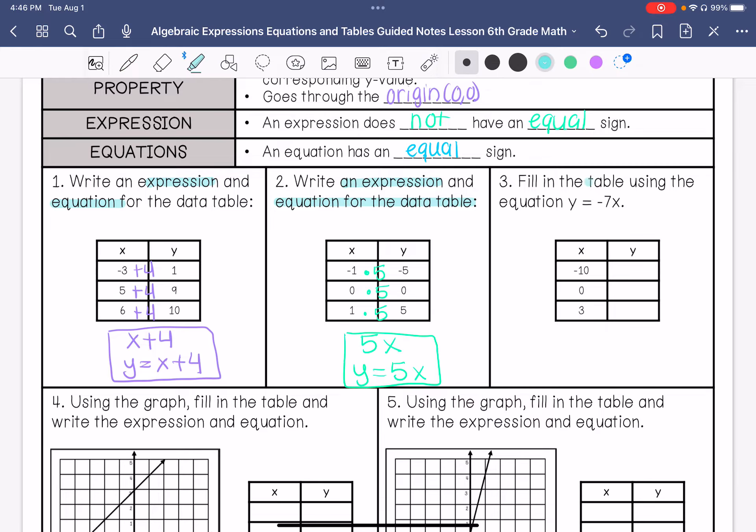Fill in the table using y equals negative 7x. That means I'm going to multiply all the x values by negative 7. So negative 10 times negative 7 is 70. Negative 7 times 0 is 0, and then 3 times negative 7 is negative 21.